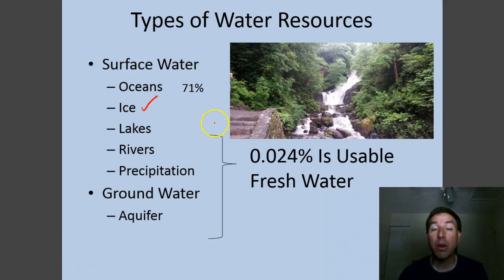That water is locked up in lakes, streams, and rivers. It's some of the precipitation, and it's also in the ground, in groundwater called aquifers. This water is the water that we need in order to survive.